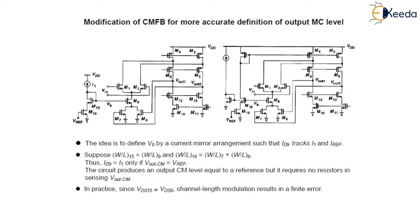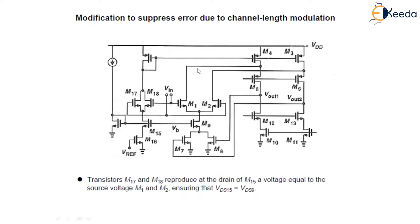And in this figure, a mode modification is done to basically suppress this error. Transistors M17 and M18 reproduce at the drain of M15 a voltage equal to the source voltage of M1 and M2, which ensures that VDS15 is equal to VDS9.